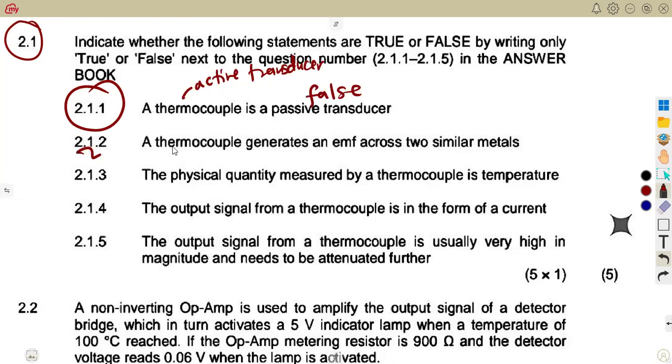On 2.1.2, a thermocouple generates an EMF across two similar metals. No, it is going to take it across two different types of metals, not similar, but they are supposed to be different types. So meaning to say this was also false.